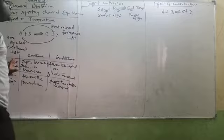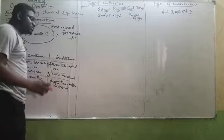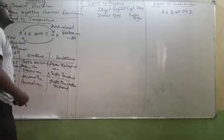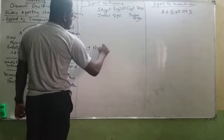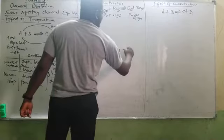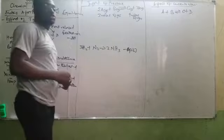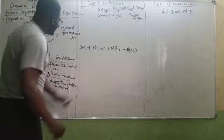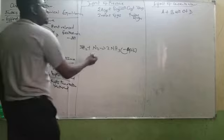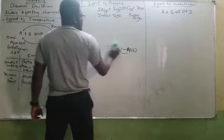To understand the effect of temperature, you must first identify the enthalpy. For example: 3H₂ + N₂ → 2NH₃, ΔH = −92 kJ/mol. Since delta H is negative, this is exothermic. If you increase temperature in this exothermic reaction, it will favor the backward reaction because excess heat is already being produced.